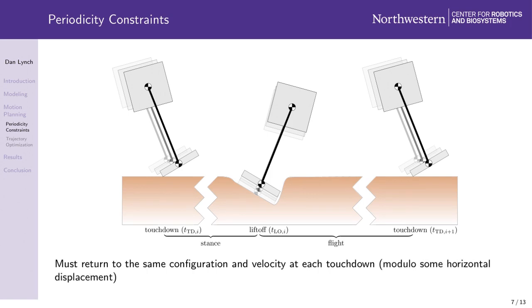We have to allow some horizontal displacement, otherwise the monopod would be hopping in place. However, rather than directly constraining horizontal displacement, we instead enforce a constraint on the forward hopping speed. Thus, we have a two-phase motion planning problem with boundary constraints.